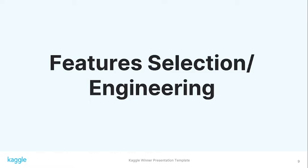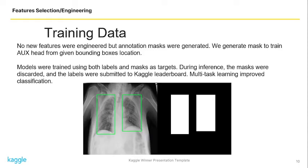For feature selection and engineering, from the given training dataset we regenerated segmentation masks to train our segmentation head in our second pipeline. We find that applying this kind of multitask learning improves our classification performance, but during inference we only submit the label and the masks are discarded.